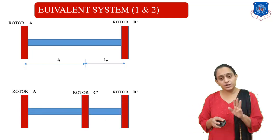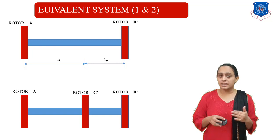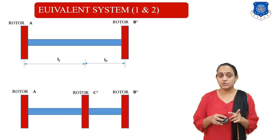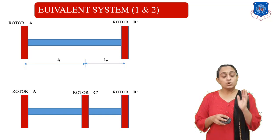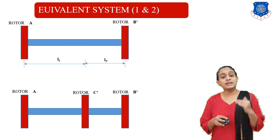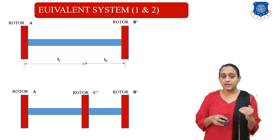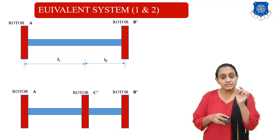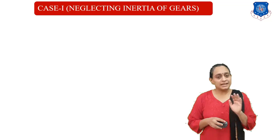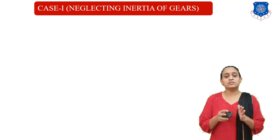In the second equivalent system, we consider three rotors: rotor A, rotor C-dash, and rotor B-dash. In the first case, we are neglecting the inertia of gears — meaning we are neglecting the gears themselves. In the second diagram, we consider rotor A, rotor C-dash, and rotor B-dash, where C-dash represents the inertia of gears. Let us first consider Case 1, in which we neglect the inertia of gears.